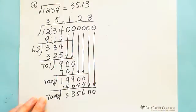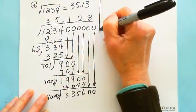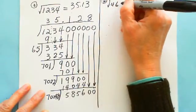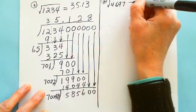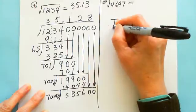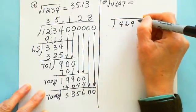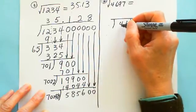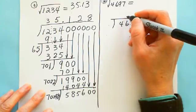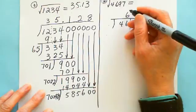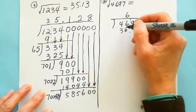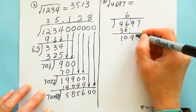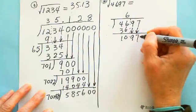Let's try one more question: find the square root of 4697. We split into two digits from the right side: 46 and 97. Estimate which number squared is close to 46. 7 times 7 is 49 — too big. So it's 6: 6 squared is 36. Subtract to get 10, then carry down the next two digits: 1097.